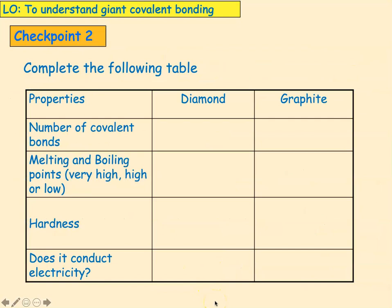What I want us to do now is draw another table. We're going to summarise what we've learned about diamond and graphite. Sketch yourself this table, pause the video and fill it in, and come back when you've done it.